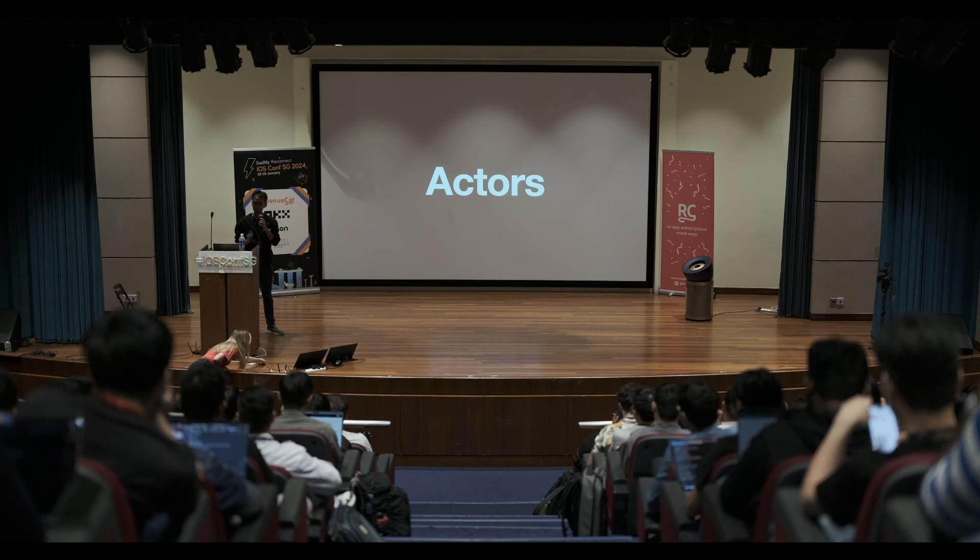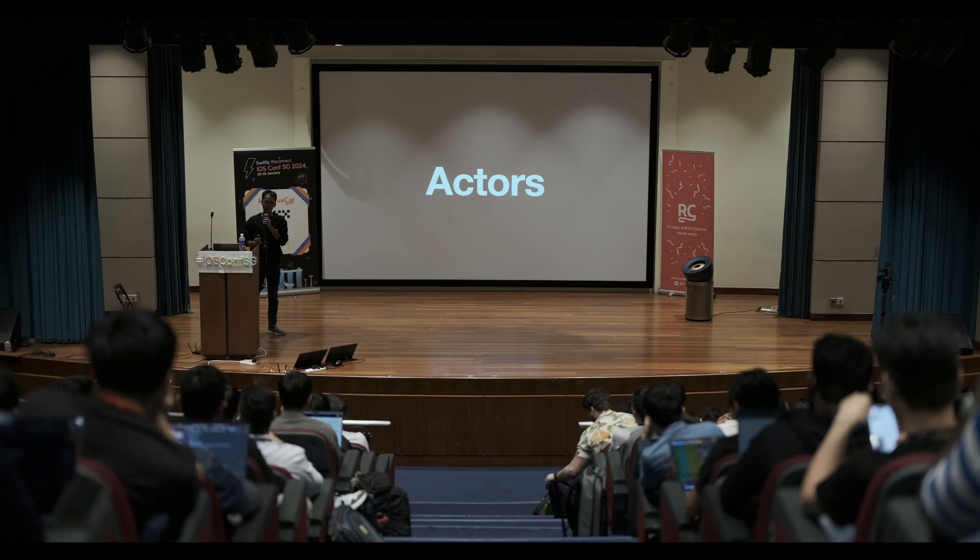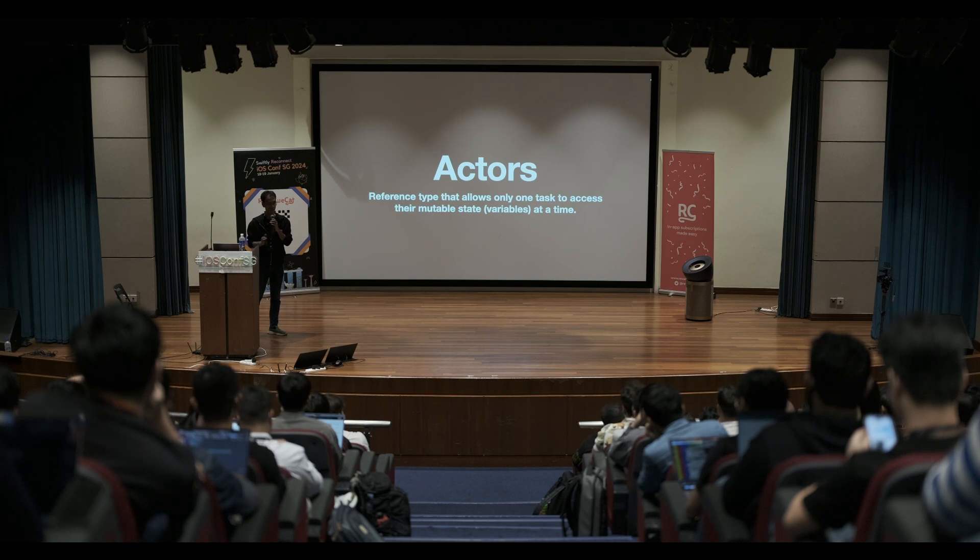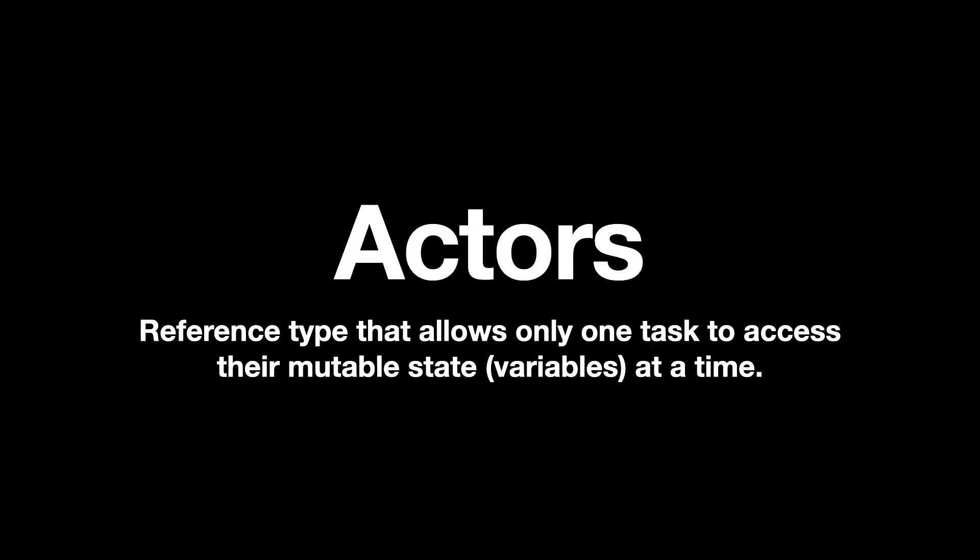If you have been working with Swift for quite some time, most likely you have come across actors. If you are not familiar, let me give you a quick definition. Actors are reference types, similar to classes, but what makes them different is that only one task is allowed to access its mutable state at one time. Data races happen when multiple tasks try to access the same mutable state at the same time, so when using actors, we can effectively prevent data races from happening.